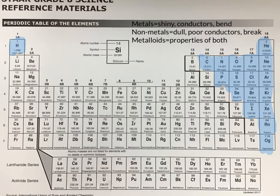Properties of nonmetals include being dull, meaning they are not reflective or shiny. They are poor conductors of heat and electricity, and they also break very easily when placed under stress.